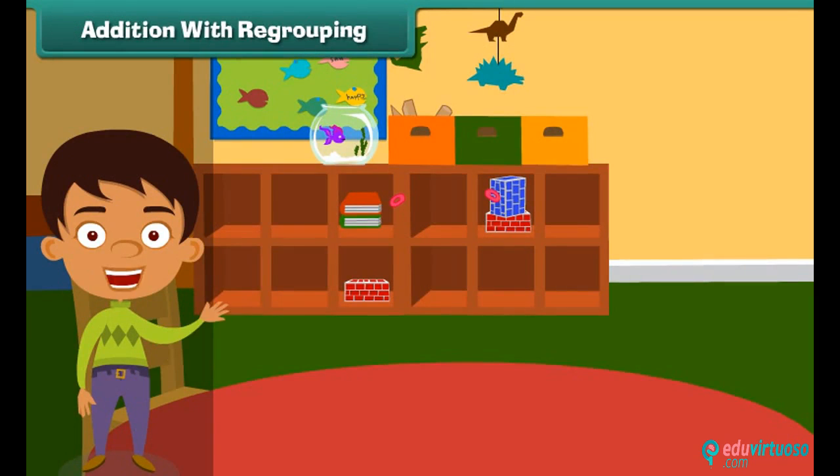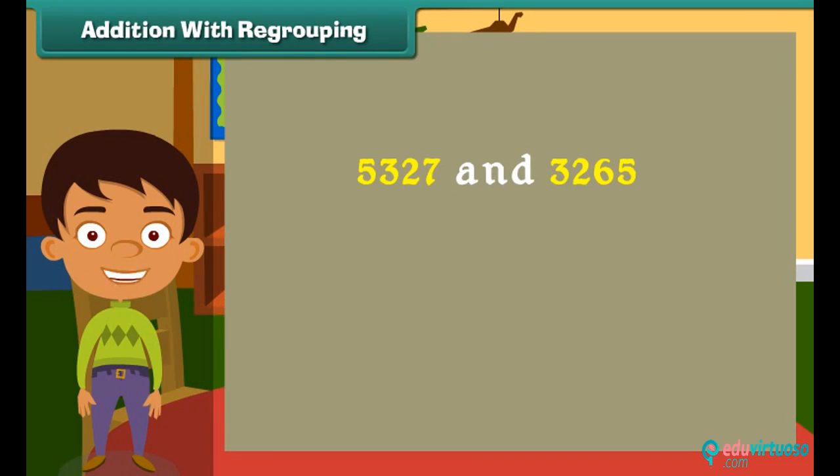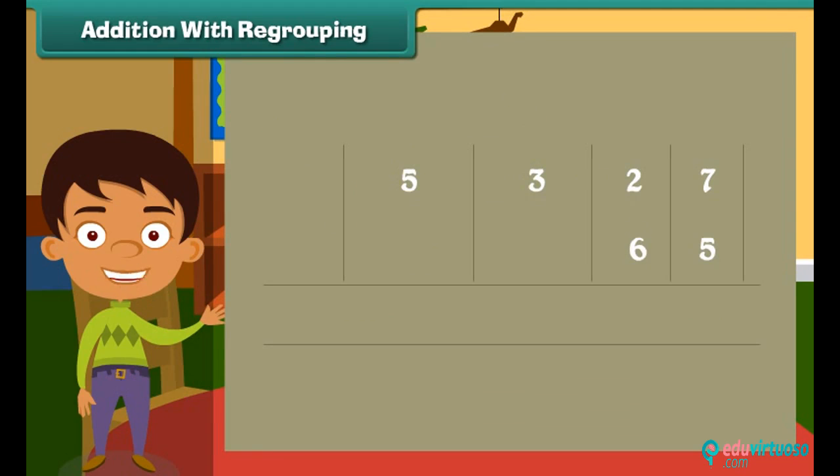Addition with regrouping. Let's try the addition of 5327 and 3265. We start by adding values at ones place which is 7 plus 5 is equal to 12. Write 2 below in the ones line and write 1 above in the tens.